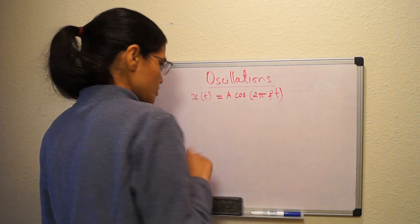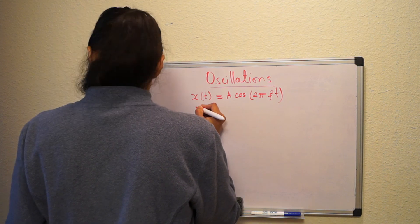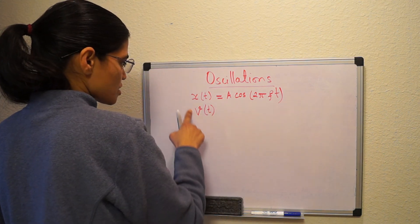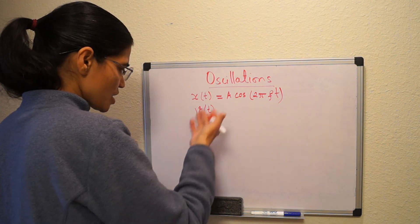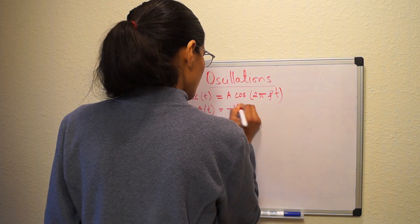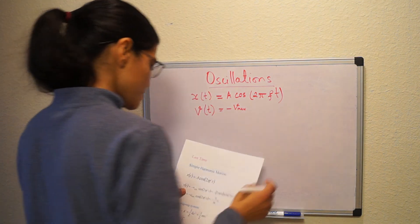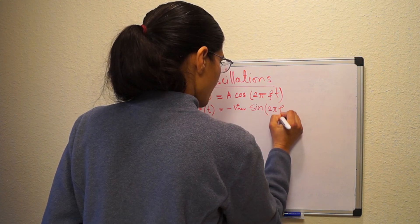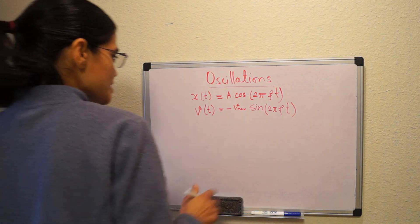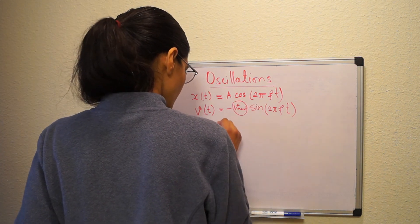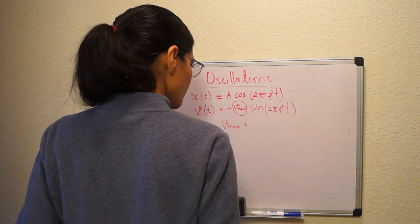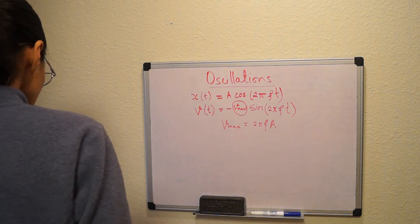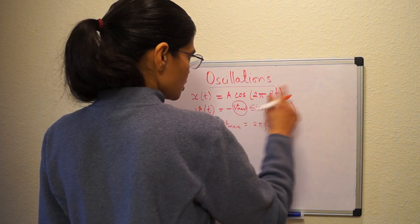We also wrote the equation for velocity: v(t) = -v_max sin(2πft). Instead of cosine we have sine, and there is a negative sign. v_max can be written as 2πf times A.